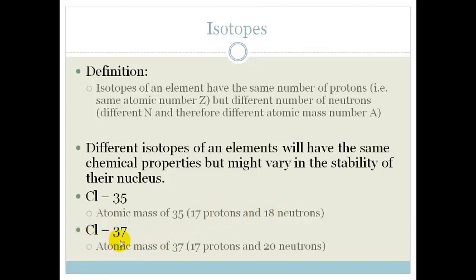Chlorine-37 also occurs in nature, and this is made up of 17 protons, which we expected because if it didn't have the same number of protons, it wouldn't be chlorine. But this time we've got 20 neutrons.